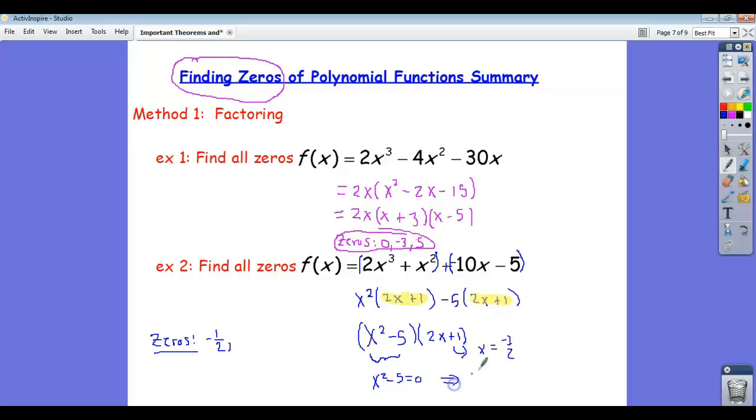If you do a little algebra, that means x squared equals 5 and you square root and you get x equals plus or minus root 5. So those are my other two zeros.